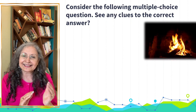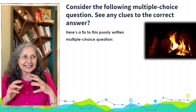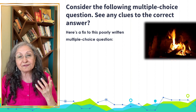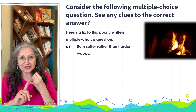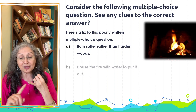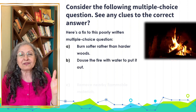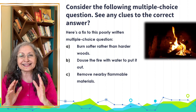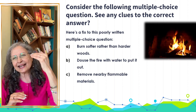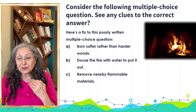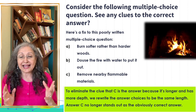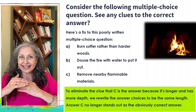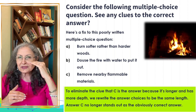So how do you correct this? Here is the fix: option one becomes 'burn softer than harder woods,' option two 'douse the fire,' and option three — we've shortened it to 'remove nearby flammable materials.' That's one way of eliminating discrepancy in the items you give for selection. By making all options the same length, students now have to genuinely battle with all three options equally.